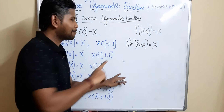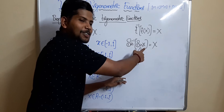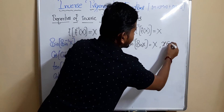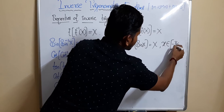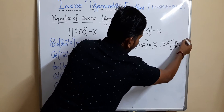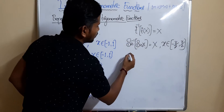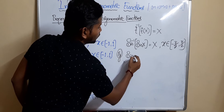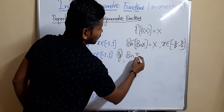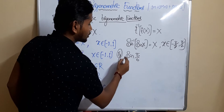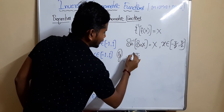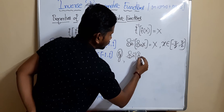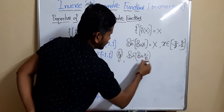For sin⁻¹(sin(x)) = x, sine is defined for particular angles, so x must be in the range of sin, which is [-π/2, +π/2]. For example, I'll take the angle π/6: sin⁻¹(sin(π/6)).